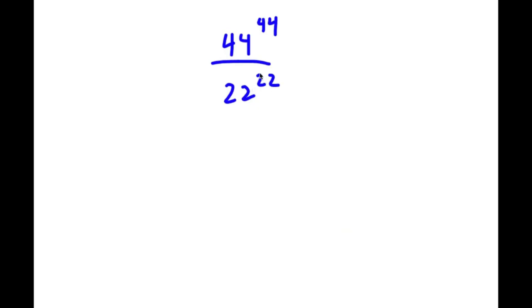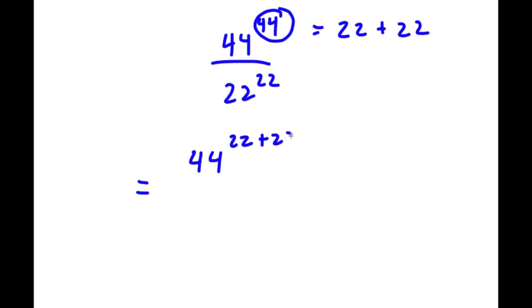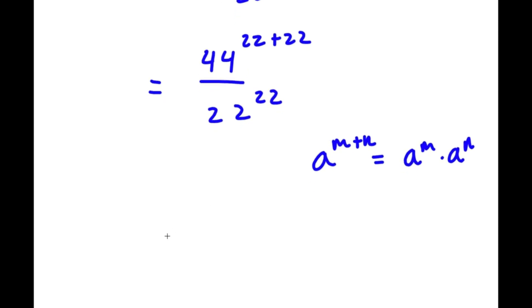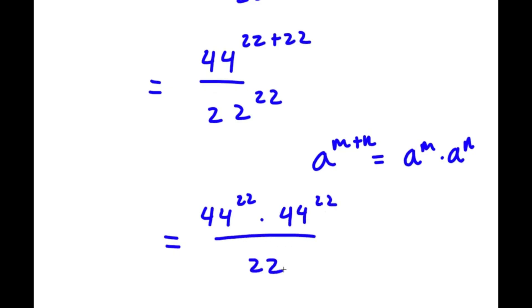In this problem, I have 44 to the power of 44 over 22 to the power of 22. To start, 44 is the same as 22 plus 22, so this equals 44 to the power of 22 plus 22, over 22 to the power of 22. Using the property a to the power of m plus n equals a to the power of m times a to the power of n, we get 44 to the power of 22 times 44 to the power of 22, over 22 to the power of 22.